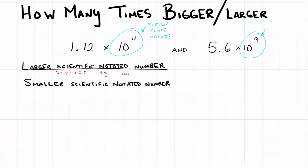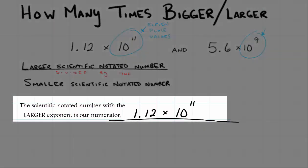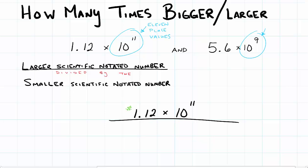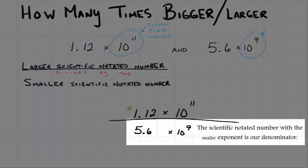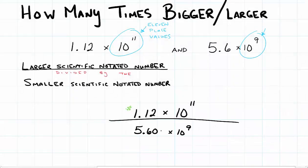All right, so let's set up our division problem. 1.12 times 10 to the 11th, that goes up top. Don't forget, think of it as money, $1.12, and then we add on 11 place values. That's our bigger number. And then on the bottom is going to be our 5.6 times 10 to the 9th. And again, I'm going to change that to make it look like money as well. So $5.60 times 10 to the 9th.